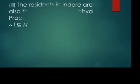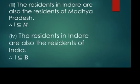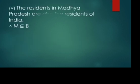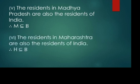The residents in Indore are also residents of Madhya Pradesh, so R is a subset of M. The residents in Indore are also residents of India, so R is a subset of B. The residents in Madhya Pradesh are also residents of India, so M is a subset of B. The residents in Maharashtra are also residents of India, so H is a subset of B. In total we could make six subsets from these relations.